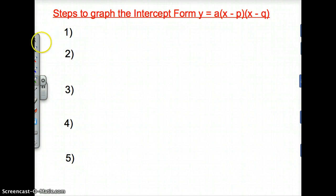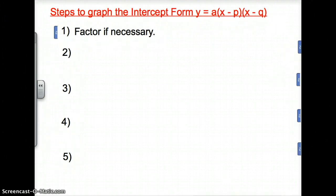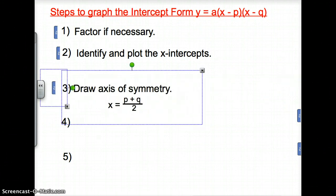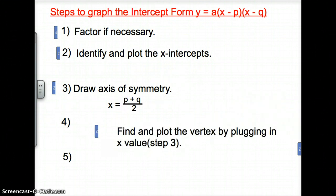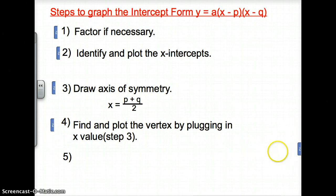So now, the steps to graph the intercept form of y equals a times the quantity x minus p times the quantity x minus q. First, you factor if necessary. Second, we have to identify and plot the x-intercepts. Next, we draw the axis of symmetry, which is x equals p plus q, and divide that by 2. Next, we find and plot the vertex by plugging in the x value. So you plug in step 3 into your original equation. And then finally, our last and final step, and everybody's favorite step, is to draw the parabola through the vertex connecting the three dots that you have on the graph.